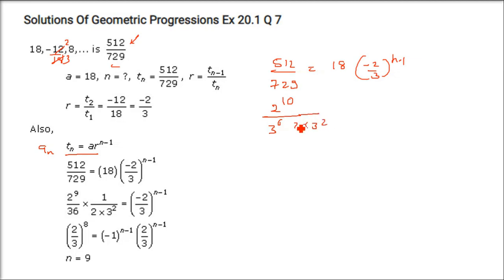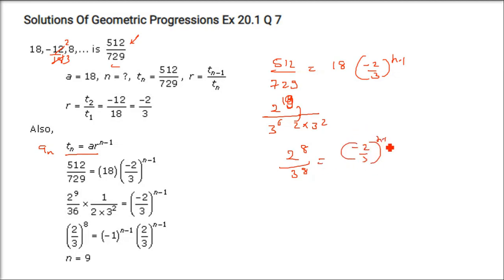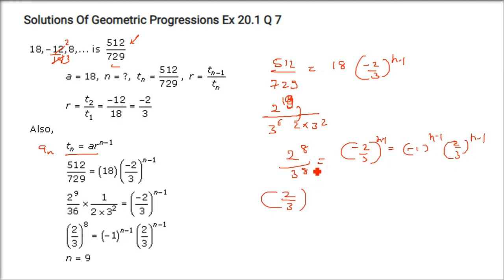18 can be written as 2 into 9, and 9 as 3 squared. So 2^9 divided by 2 gives 2^8, and 3^6 at the powers gives 3^8. This becomes (−2/3)^(n−1). We can write it as (−1)^(n−1) · (2/3)^(n−1), and this equals (2/3)^8.